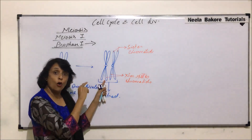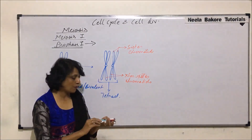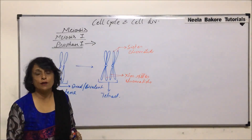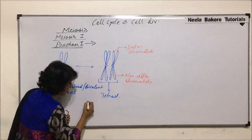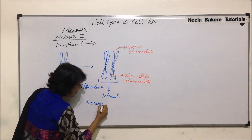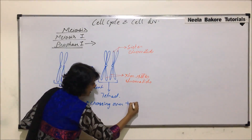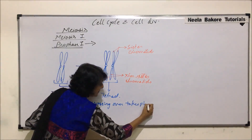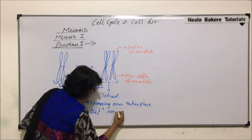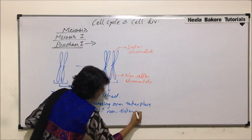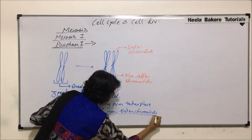Arms of one chromosome are called sister chromatids. If we are comparing the arms of the homologous chromosomes, then they are called non-sister chromatids. Crossing over always takes place between non-sister chromatids. This is very important.